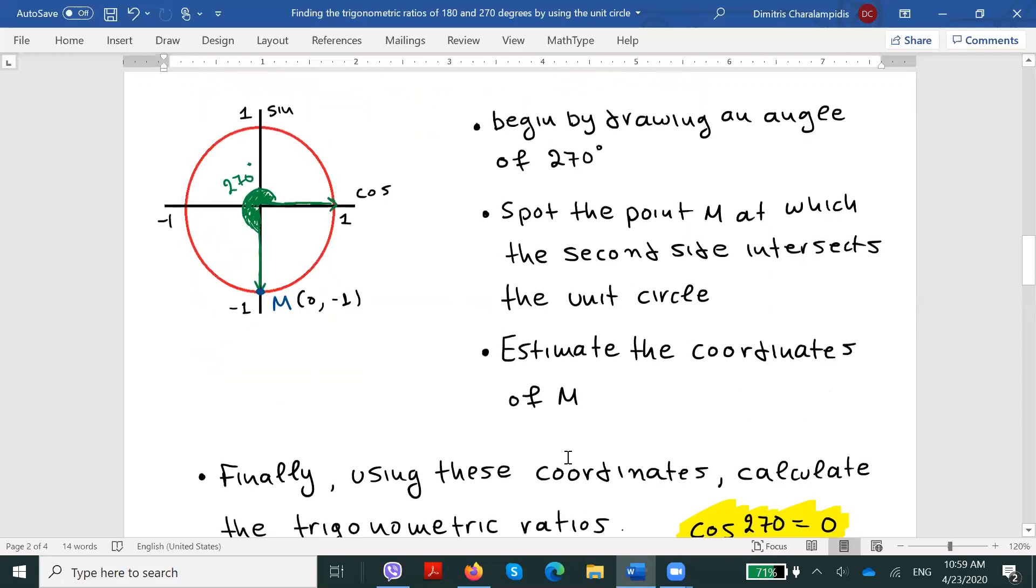It is evident from the graph in front of us that M will have as its coordinates (0, -1). And finally, remember that using these coordinates, we can easily calculate the trigonometric ratios of this drawn angle.